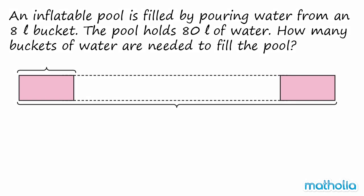Let's use a model to help find the answer. We know that the bucket used to fill the pool can hold 8 litres of water. We also know that the pool can hold 80 litres of water. We need to find the number of buckets used to fill the pool.